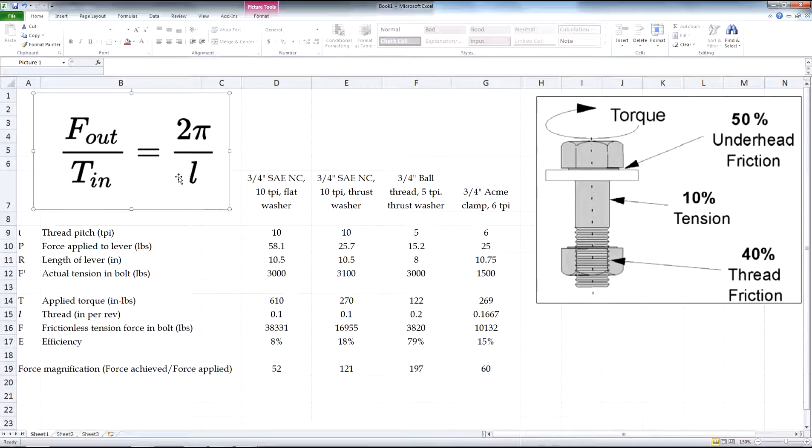L, of course, is the inverse of the pitch. So, we usually specify threads in pitch. And L is just the inverse of that. So, we could actually use pitch in this equation. Over here on the right is a diagram. This shows a standard threaded assembly. And what this is is a demonstration of what the losses are. The effort, or the work, that goes into applying torque to the bolt.